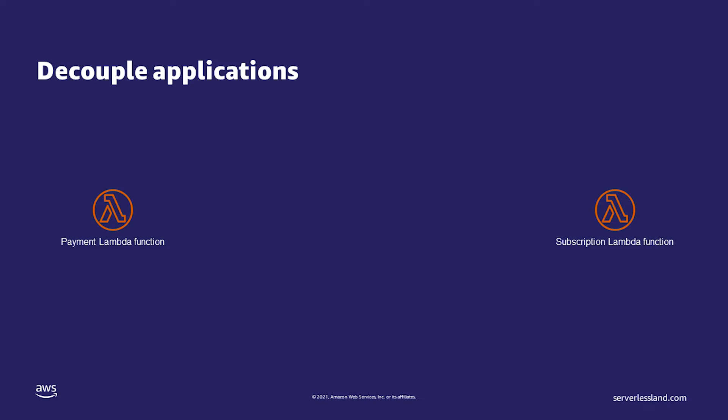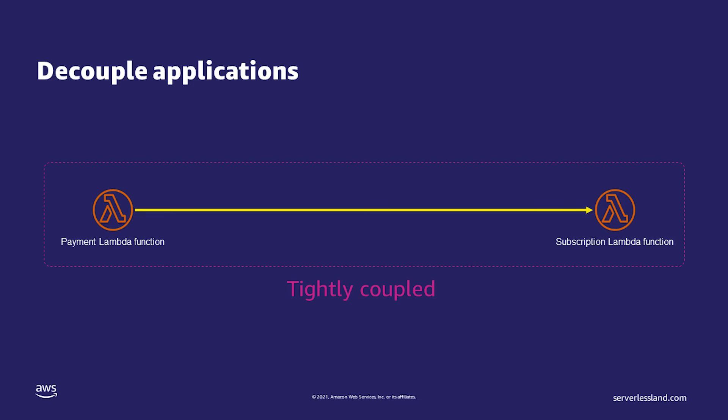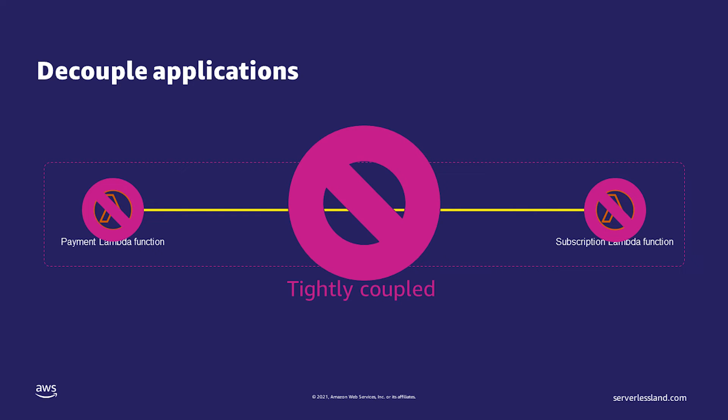Developers are also able to decouple their applications to increase application reliability. When designing applications, even using serverless, developers can often make the mistake of tightly coupling their applications. For example, consider two Lambda functions — one handles payments and the other handles subscriptions. It would be easy for the application to take the payment using the first Lambda function, then have that function call the second Lambda function to create the subscription. By doing it this way, the application becomes tightly coupled. If the subscription fails, there's a chance the payment process might get messed up as well, making the application brittle.